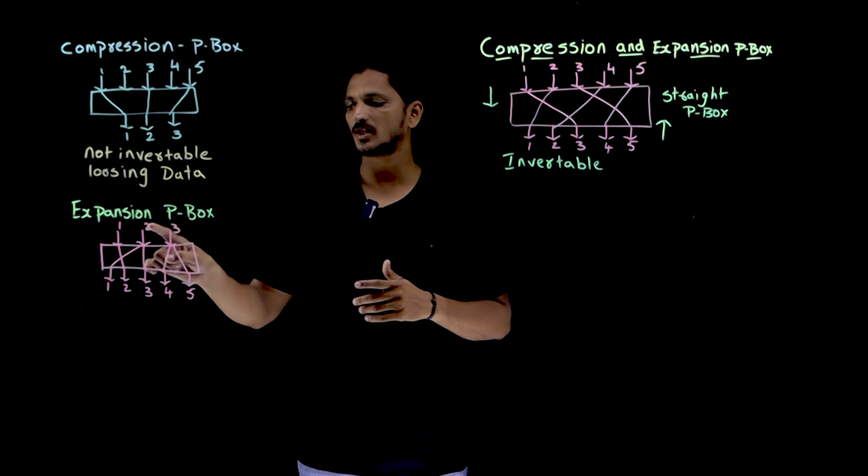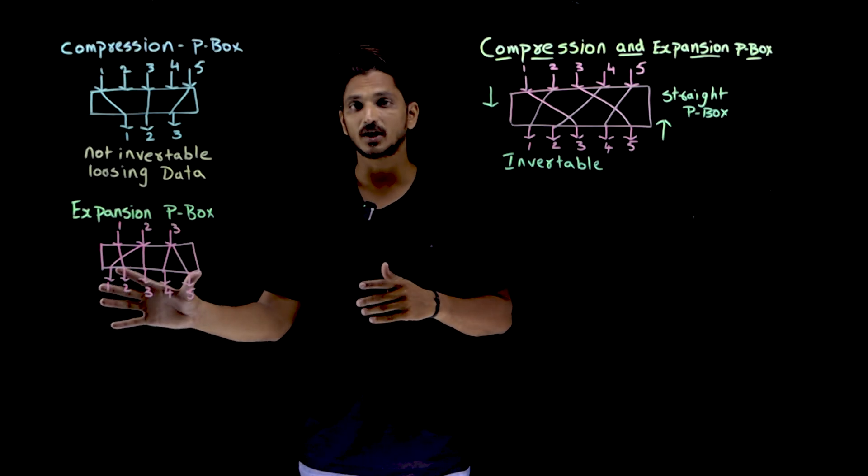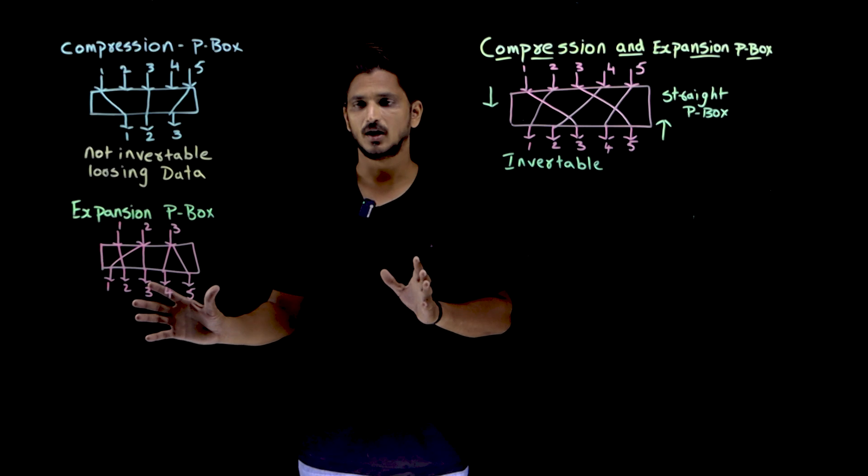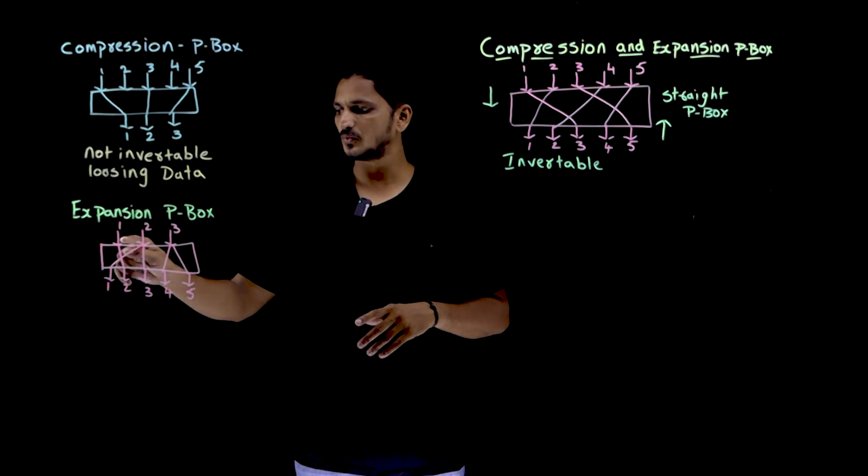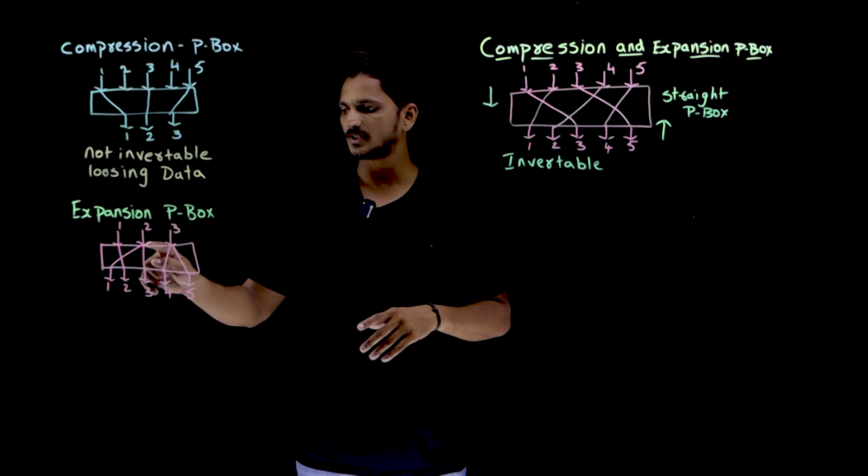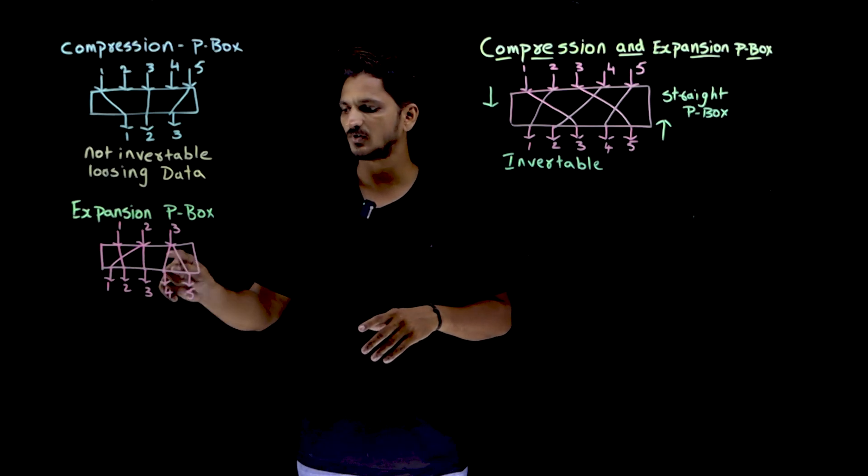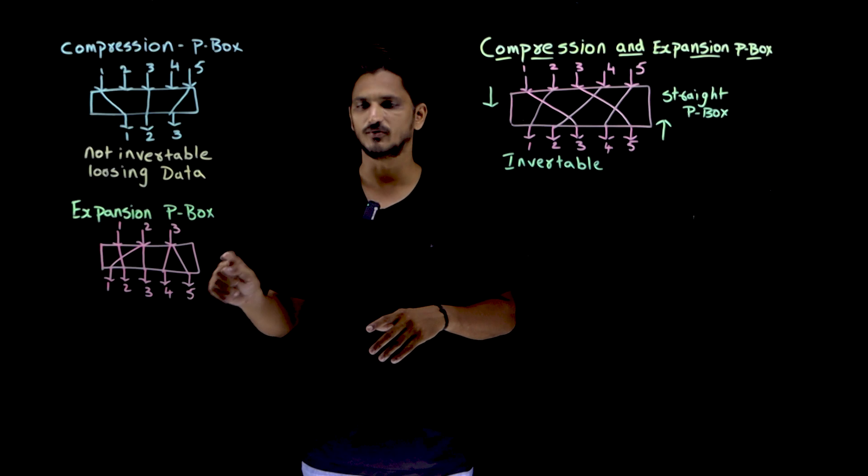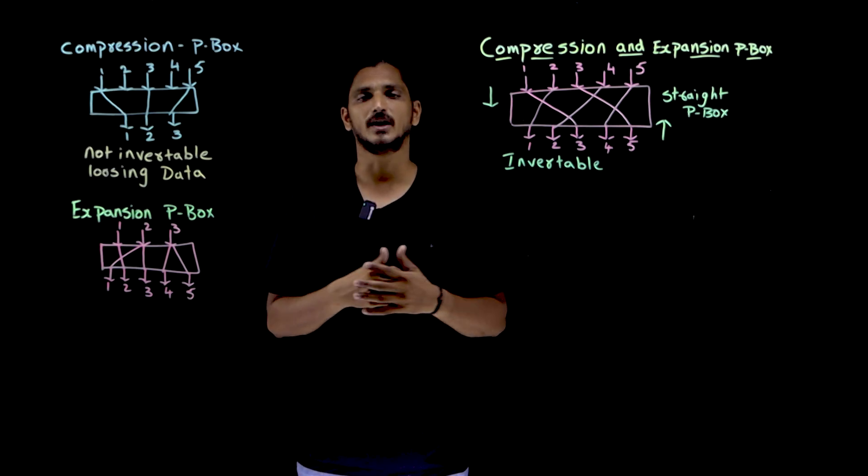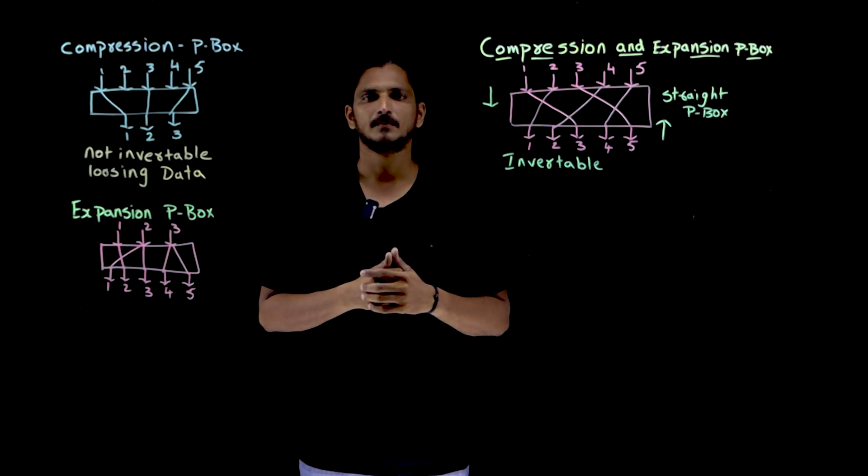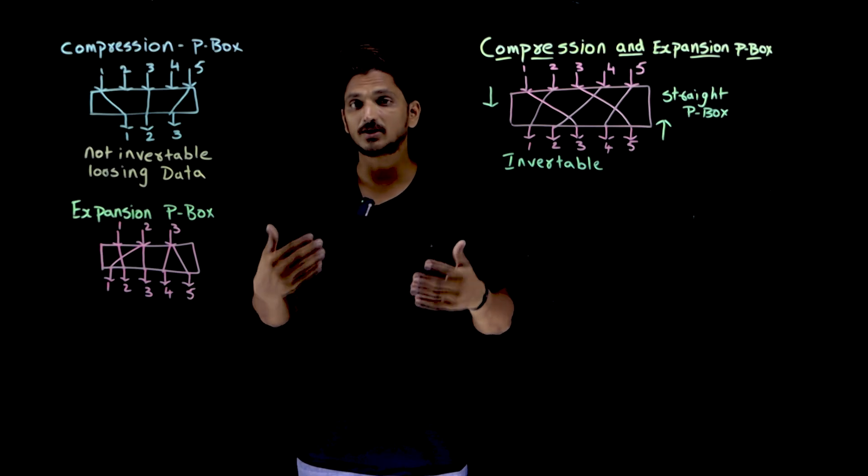How many inputs are there? 3 inputs are there. How many outputs are there? 5 outputs are there. So 1 is mapped to 1st bit and 2nd bit. 1 is mapped to 2nd bit. 2nd bit is mapped to 1st one and 3rd one. 3rd bit is mapped to 4th one and 5th one. Here repetition is there. So this is what expansion P-Box.